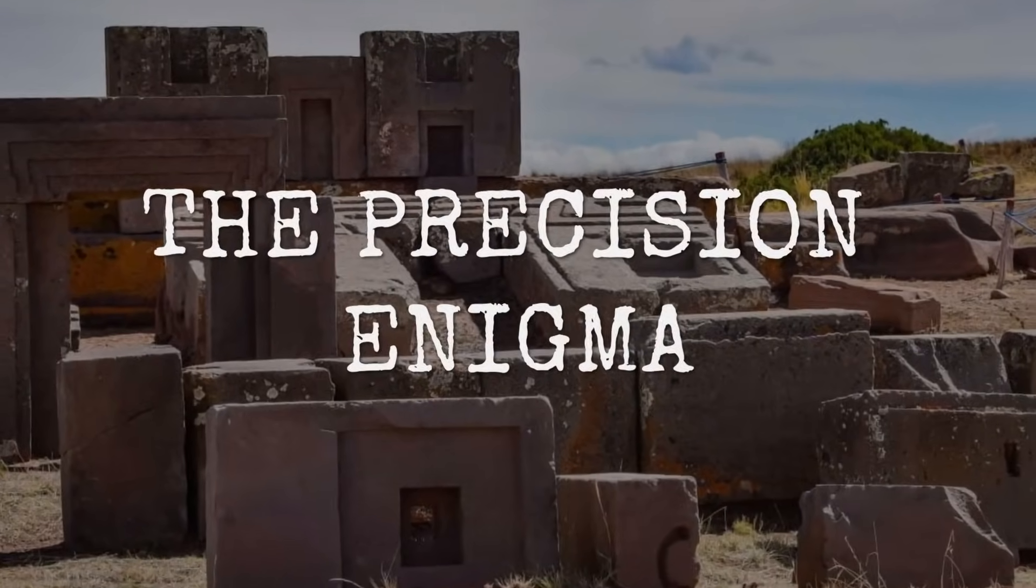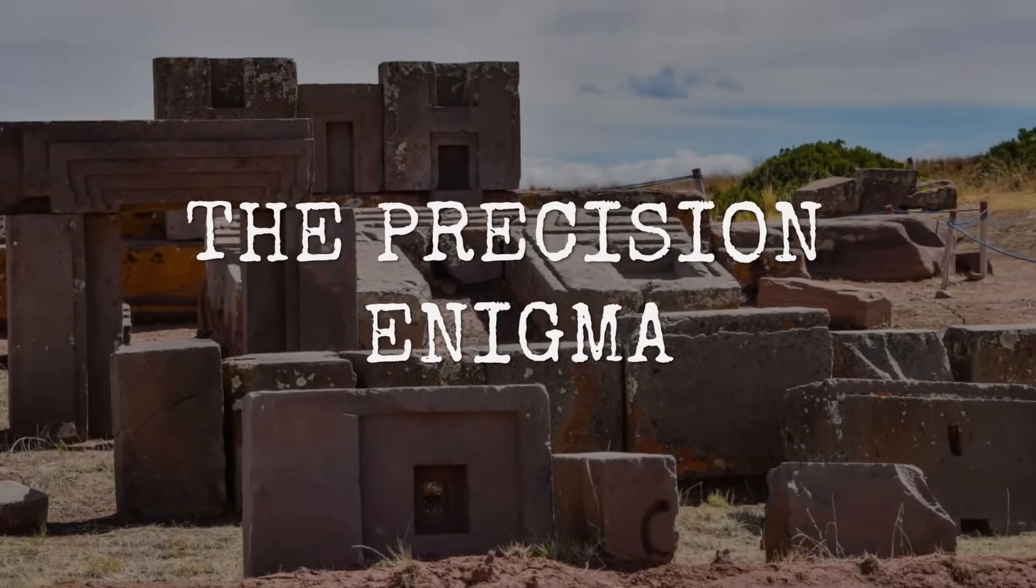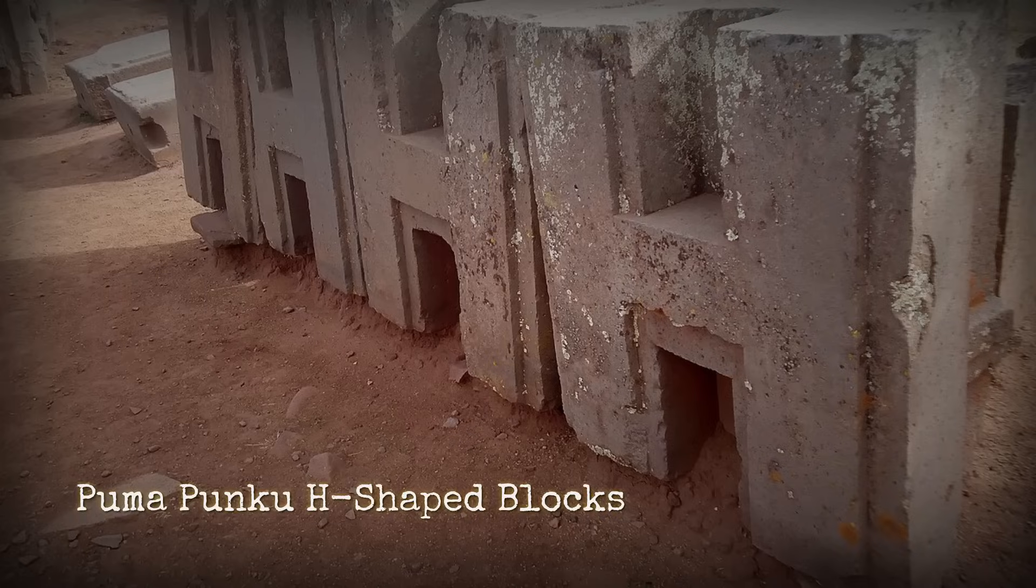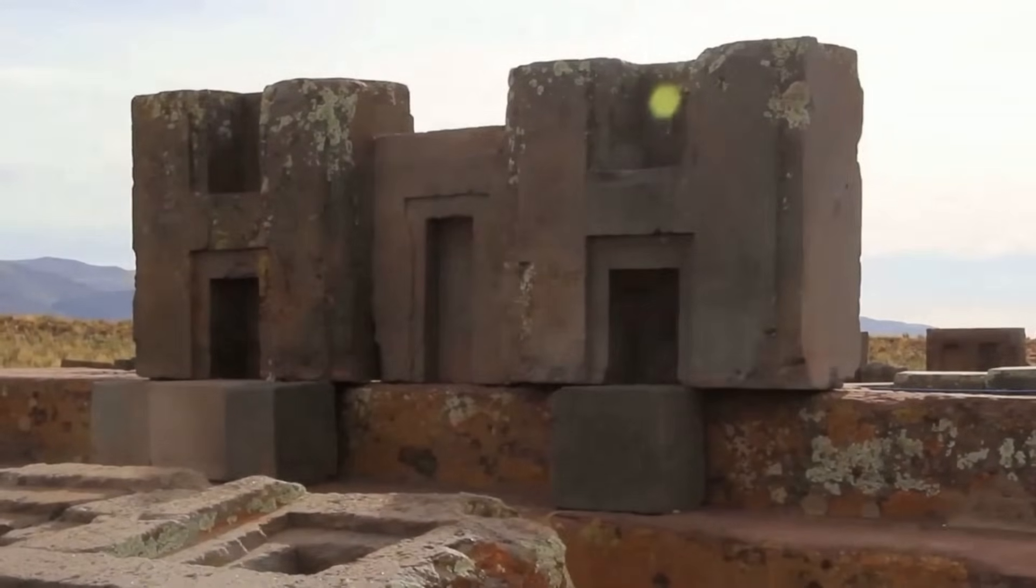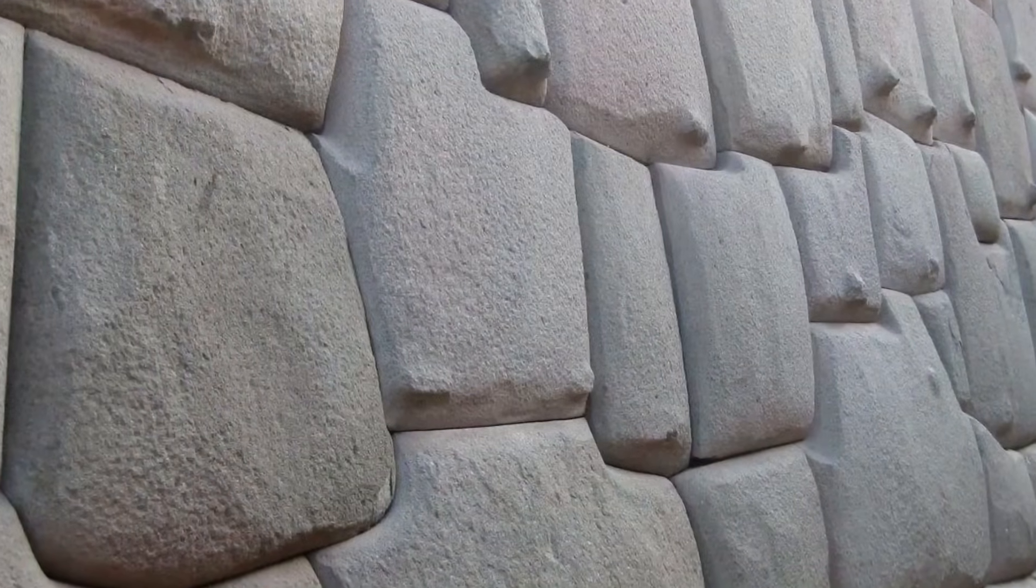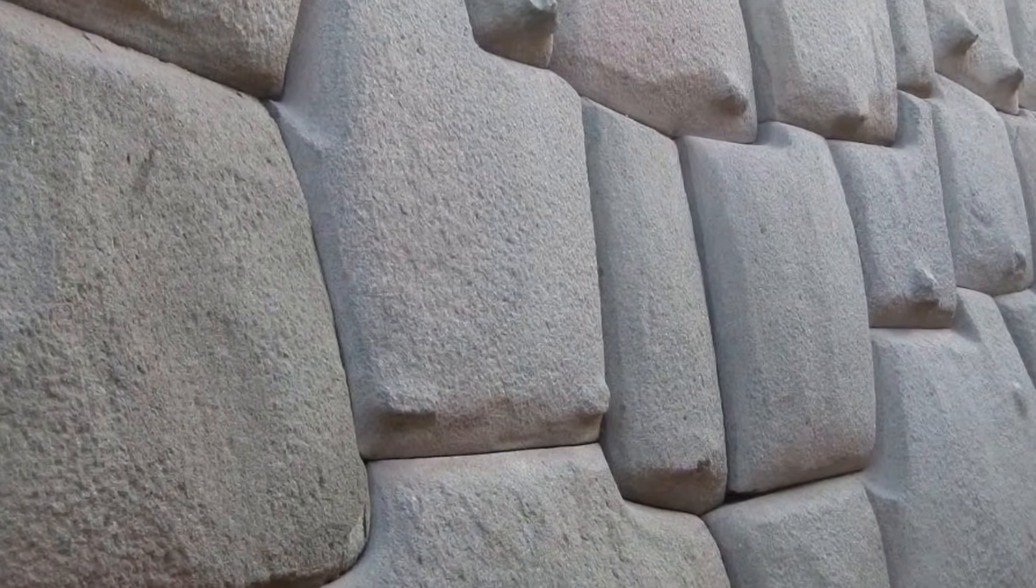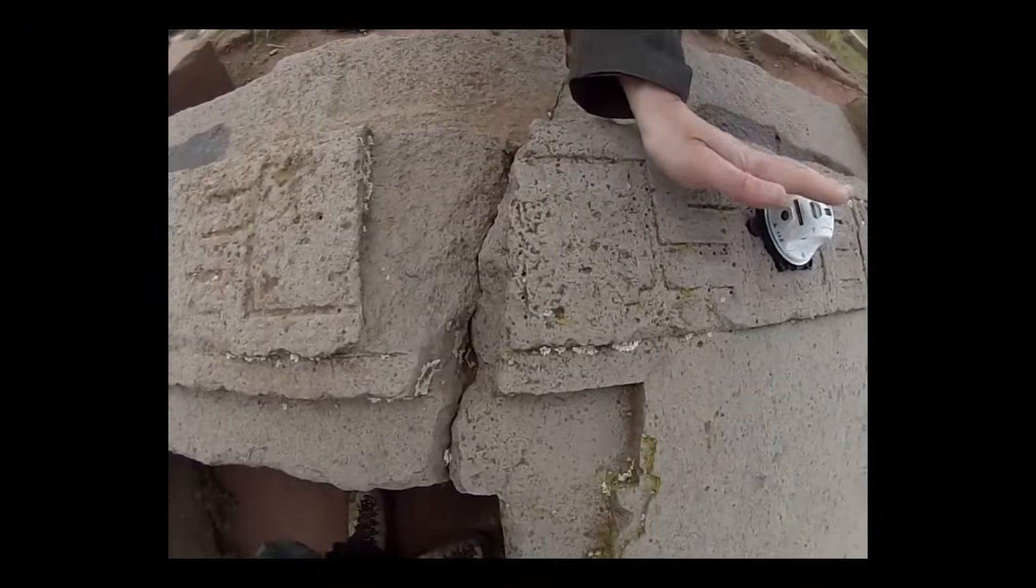At the heart of the Bolivian highlands, the stones of Puma Punku defy easy explanation. The site's most famous feature, the H-shaped andesite blocks, draws both admiration and confusion. Their surfaces, cut with such regularity, suggest a level of precision that rivals modern engineering. Joints between these massive stones appear so tight that, according to local tradition, not even a razor blade could be slipped between them.